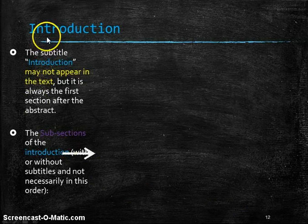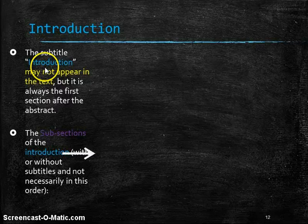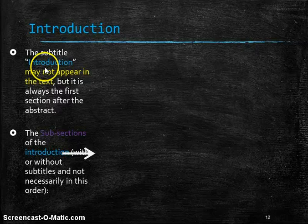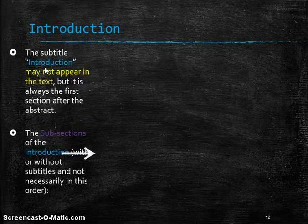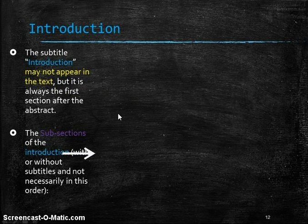Now if we get to the main part of the article, we have our introduction. The word introduction may not appear in the text, but it's always the first section of the article that comes after the abstract. And within the introduction, we have a lot of different information. It may not appear exactly in this order, but it usually appears. Let's take a closer look.